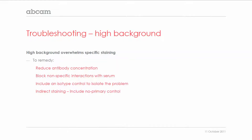The problem of high background staining might be resolved by reducing the antibody concentration, or you could block non-specific interactions of the antibodies with serum or BSA. In order to isolate this problem, isotype controls or no primary controls can be very helpful.